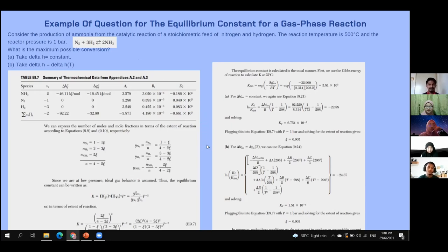When you get equations, the first thing you can do is express the number of moles and mole fractions in terms of equation 9.8 and 9.10. After that, since we are using the low pressure, the ideal gas behavior is assumed. The equilibrium constant can be written as the equation below, and then in terms of extent of reaction. You can substitute the value for the equation. After that, you can calculate the constant equilibrium in the usual manner, and you can use the Gibbs energy operation when K is at 25 degrees Celsius, and you will get 5.81 times 10 to the power of 5.